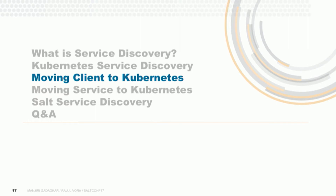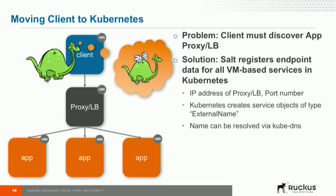Let's actually migrate something from the VM world to the Kubernetes world. In this case, we're going to move the client side to Kubernetes, leaving the server side in the VM world. The problem now is that the client running in Kubernetes needs to know how to connect to the server running in the old virtual machine world. What we've come up with is a Salt module that finds all the services deployed in the virtual machine world, makes a Kubernetes API call, and registers them inside Kubernetes so that anything running in Kubernetes can immediately discover any service running in the VM world.